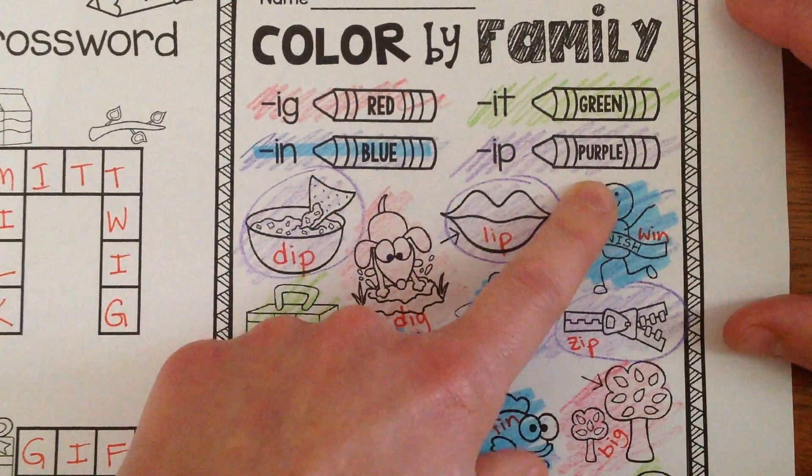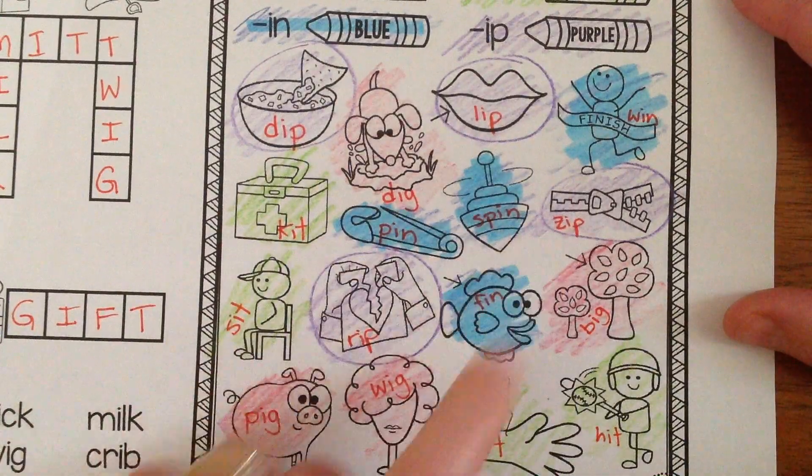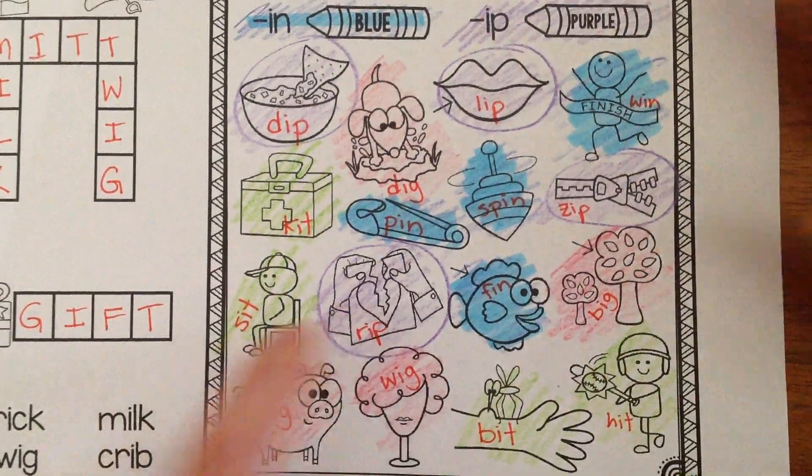And ip is purple. Dip, lip, zip, rip, tip.